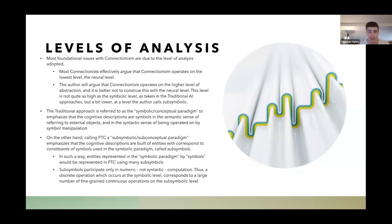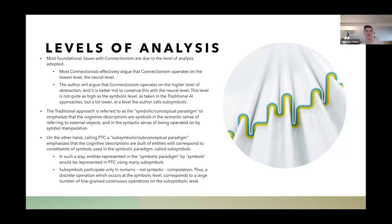Many issues of connectionism are due to the level of analysis adopted — this is what the symbolic people argue. Most connectionists say connectionism operates on the neural level, basically simulating neurons. The author is going to argue differently: that this version of connectionism operates on a higher level of abstraction than the neural level, and it's better not to construe it at the neural level. This level is not quite as high as the symbolic level, and the author calls it the sub-symbolic level.